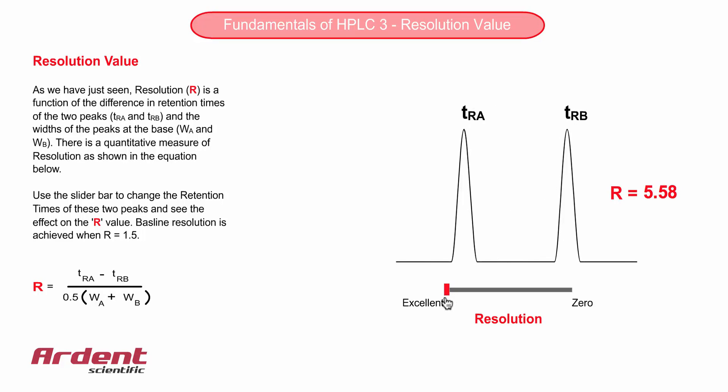Once we have this number, we have a measure of whether the separation is good or if the separation is not good enough. When the peaks are completely together, that is when the two components come out of the column at exactly the same time, then resolution value is zero.